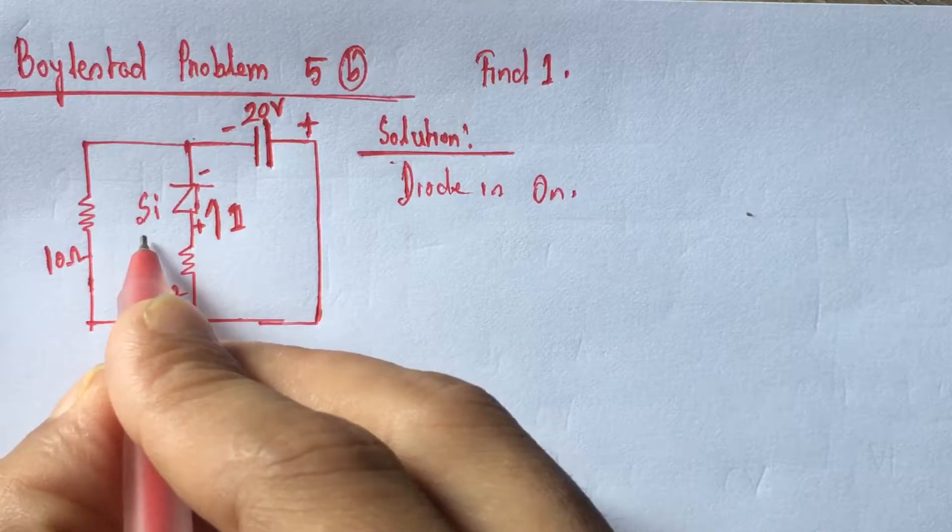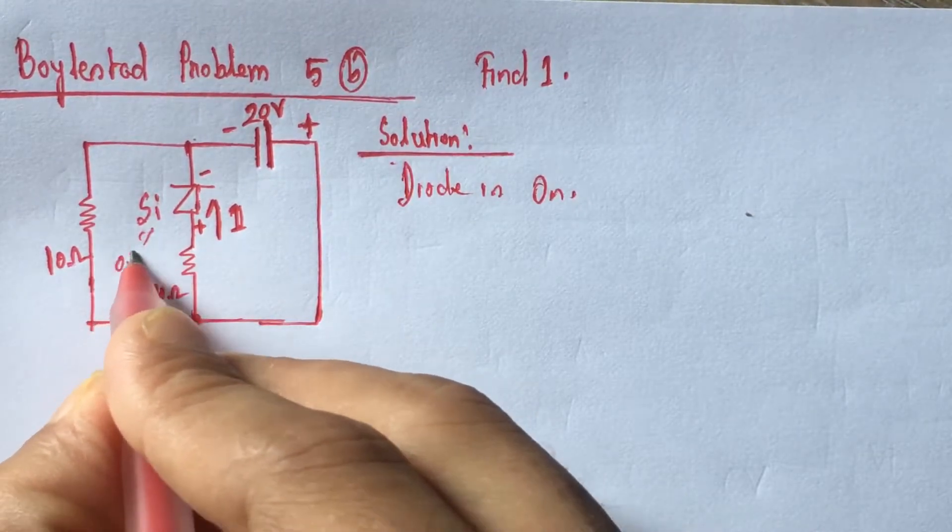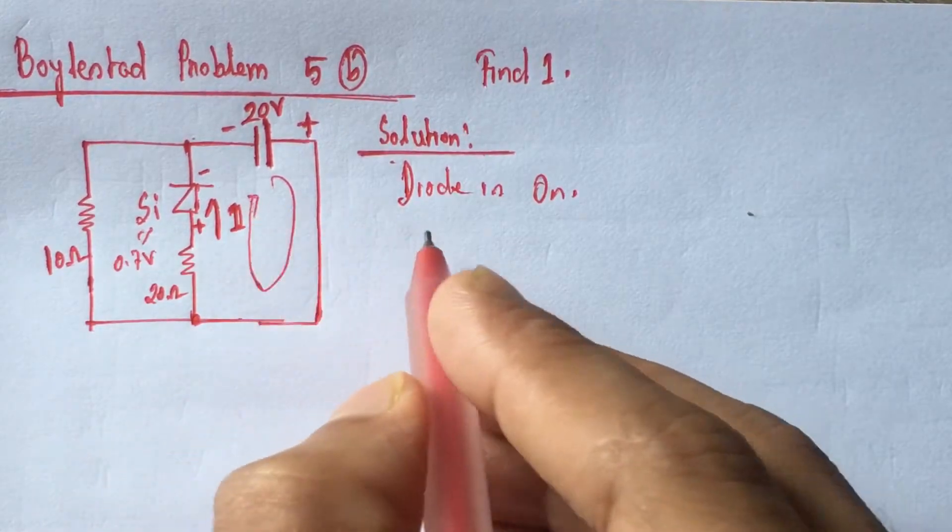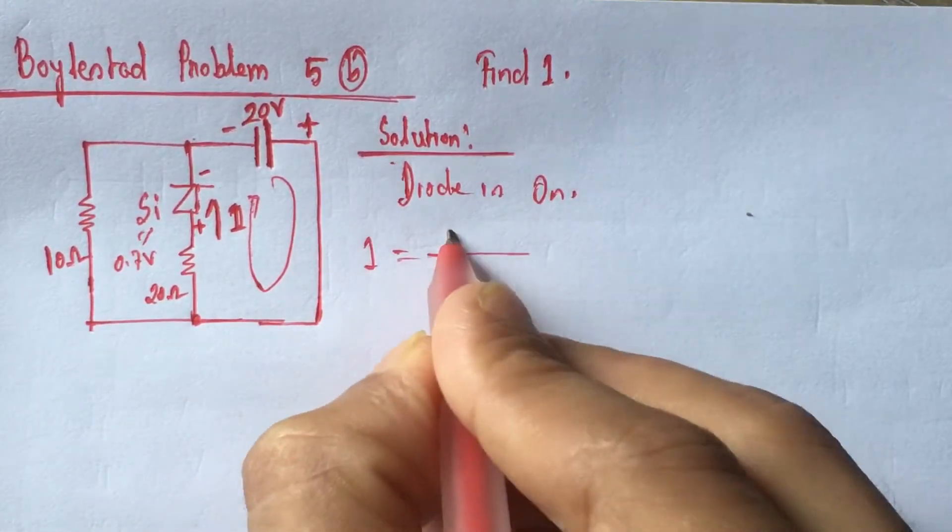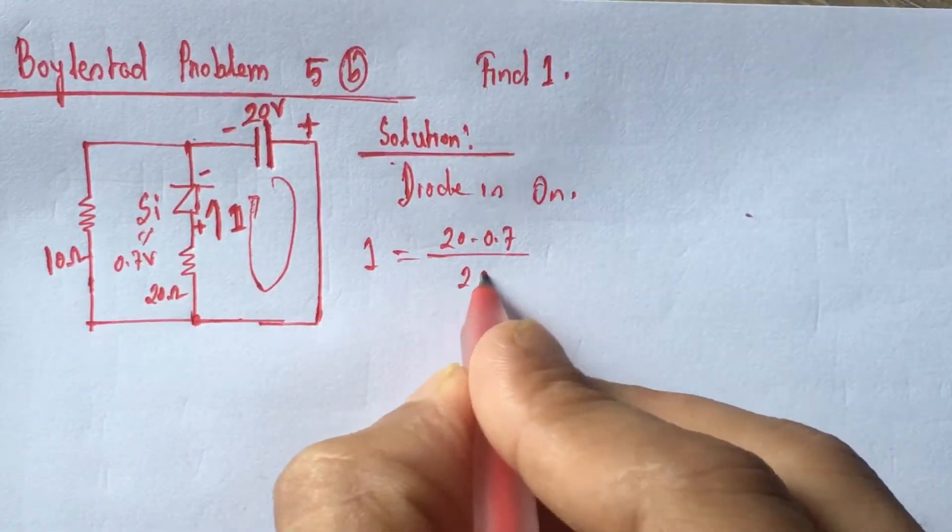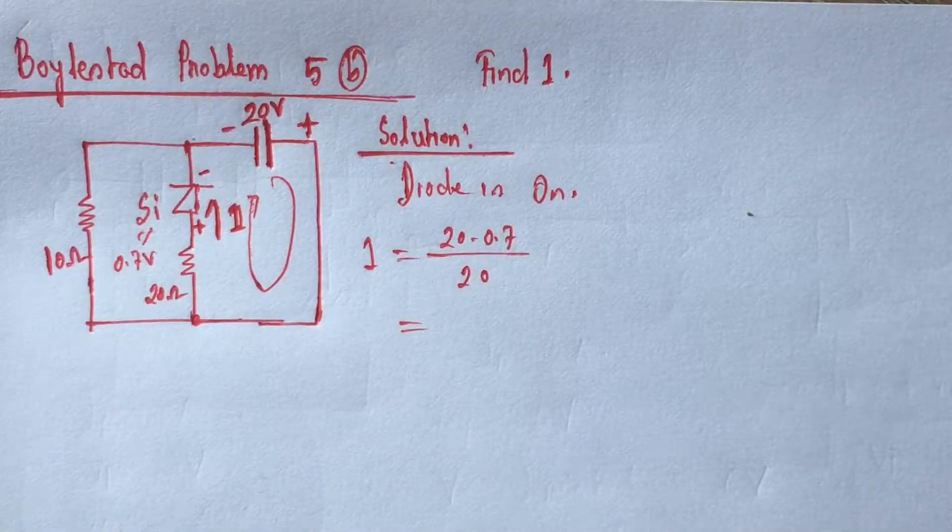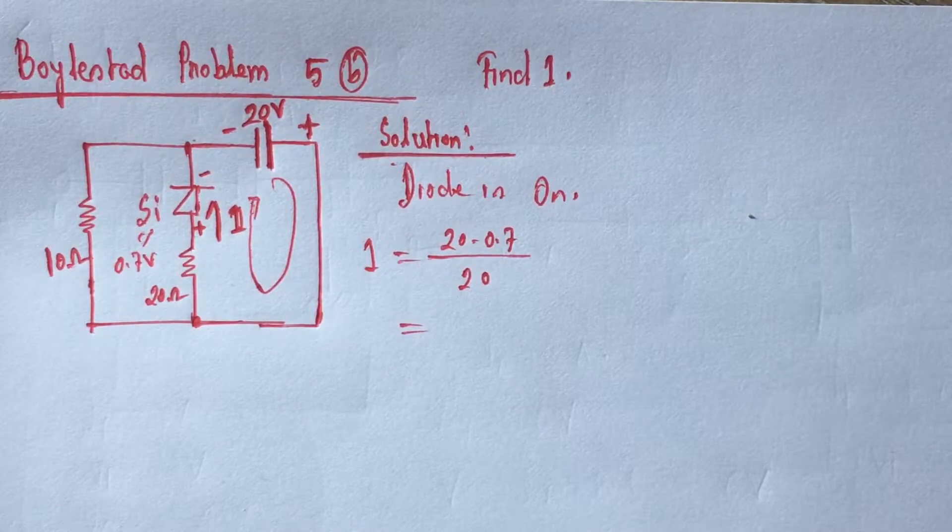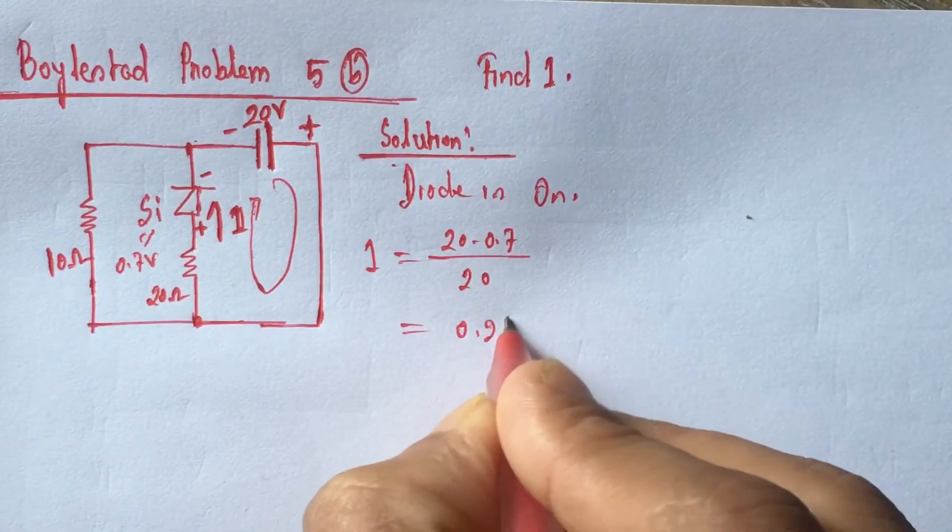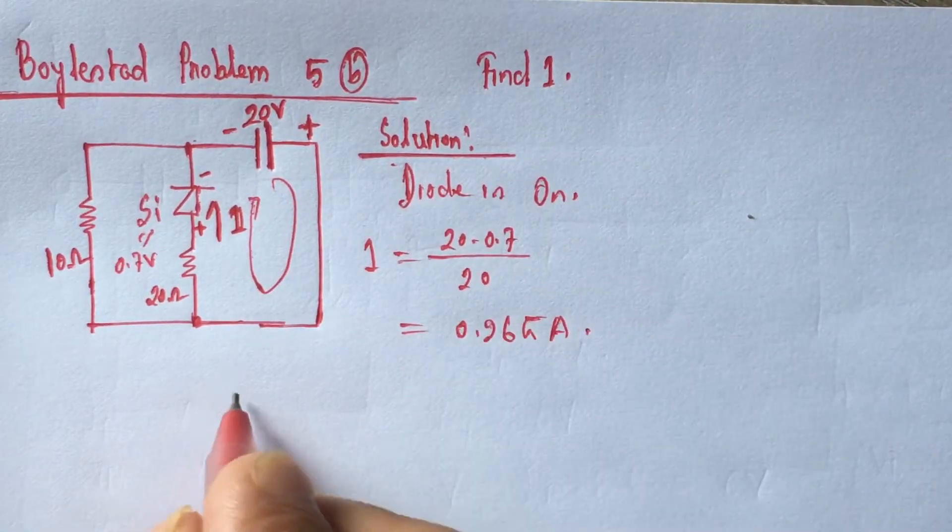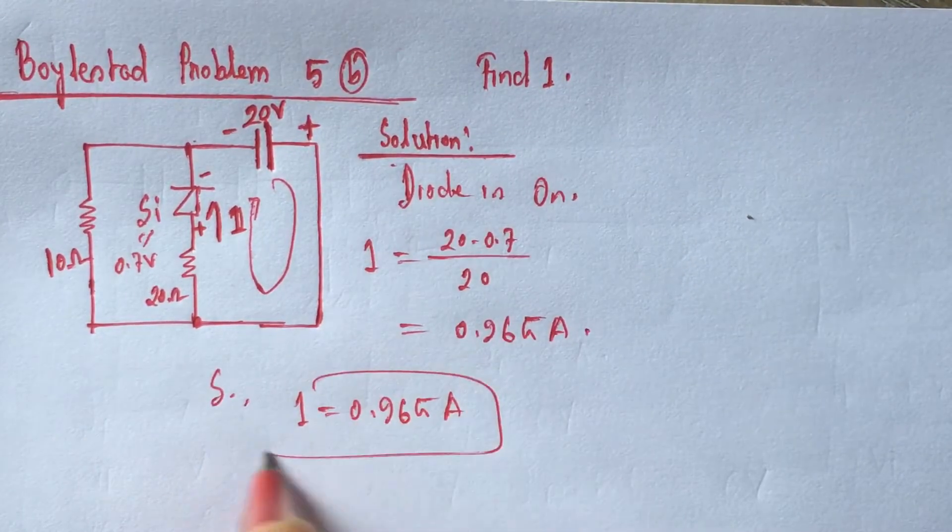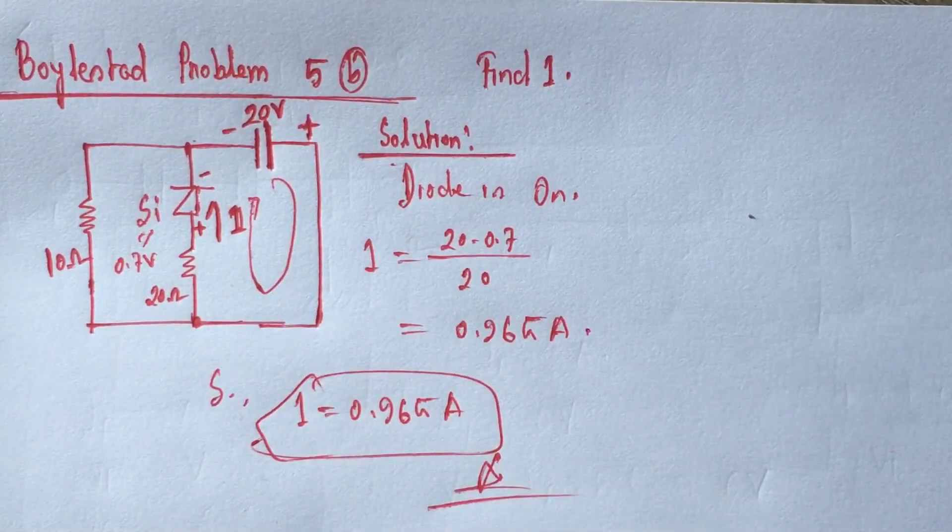Now, we know that voltage drop of silicon diode is 0.7 volts. So, the current flowing through this path is I equals 20 minus 0.7 by this resistance 20, equals 0.965 ampere. So, I equals 0.965 ampere, this is the answer.